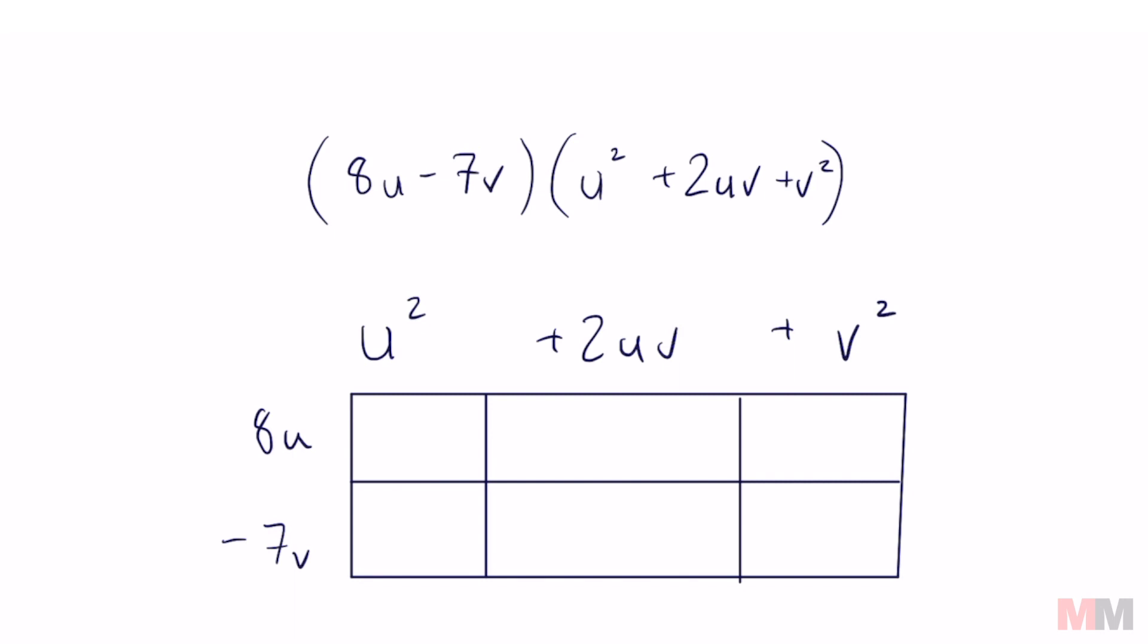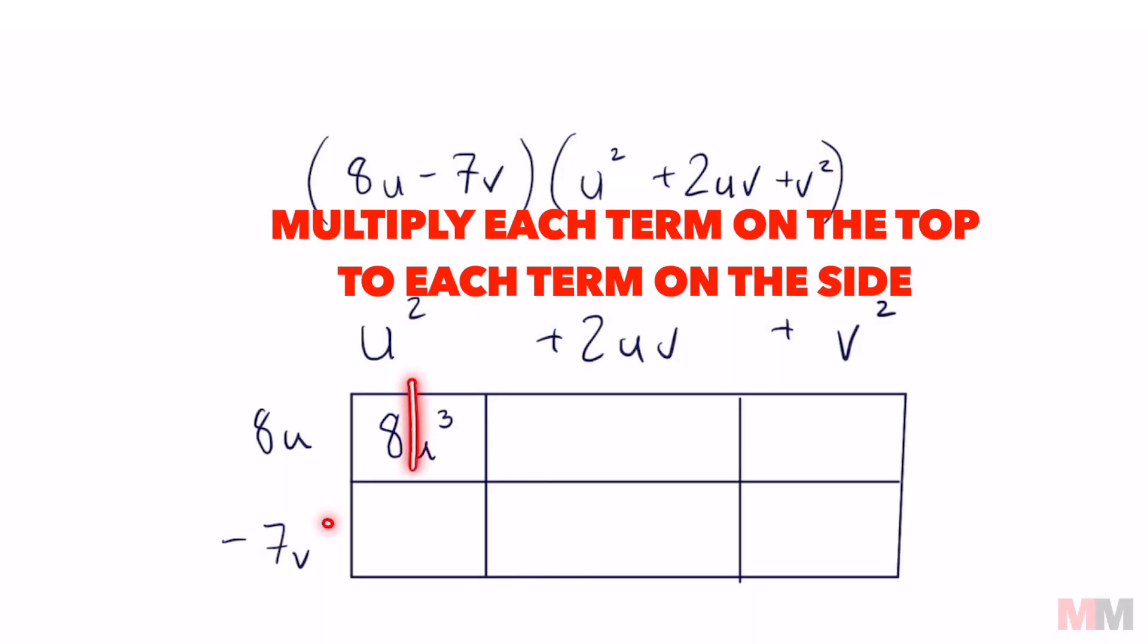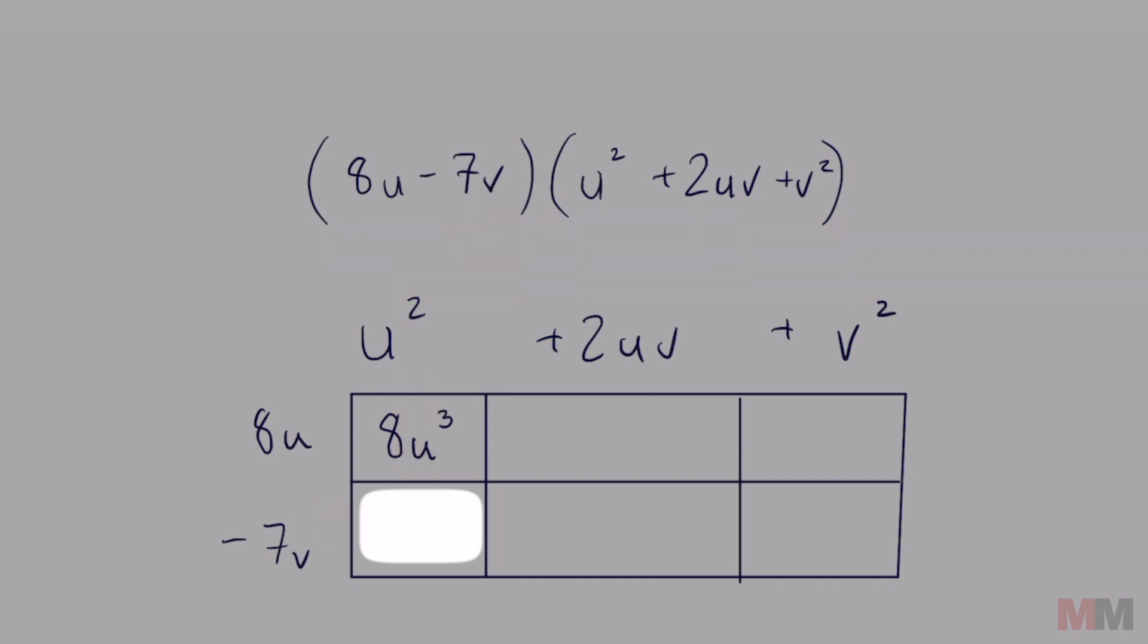Now that you got that set up, all you got to do is multiply each term where they're going to meet. So these two are going to meet in this box and that is just 8u times u squared which results in u to the third power, and you're going to do that for each box. This box is going to be u squared times negative 7v. Remember to put them in alphabetical order, negative 7u squared v. This one is going to be 2uv times 8u which is 16u squared v. This is going to be negative 14uv squared. This one on the right is going to be 8uv squared and the last one is going to be negative 7v squared times v is v to the third.